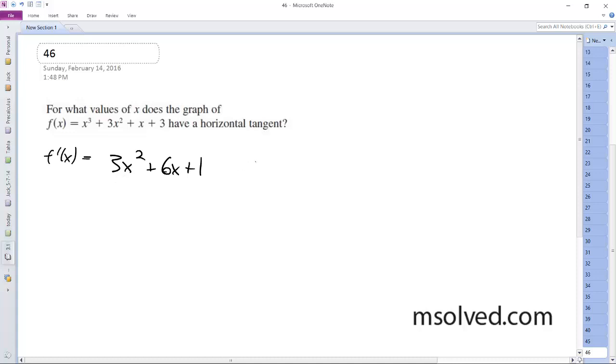And I'm going to go ahead and plug this into the quadratic formula. So the opposite of b minus square root of b squared 36 minus 4ac, which is 4 times 3 times 1, which is 12, all over 2a, which is 6.